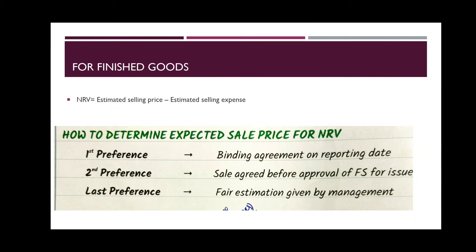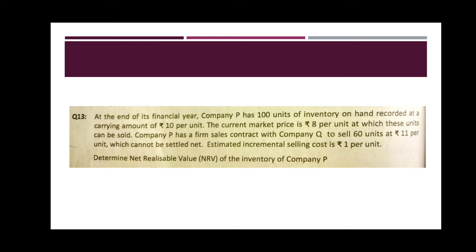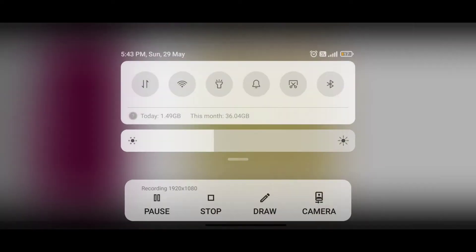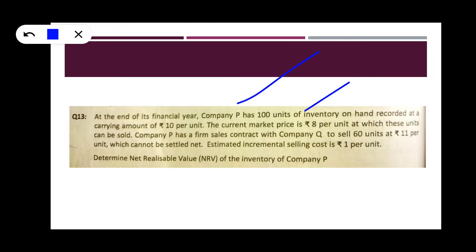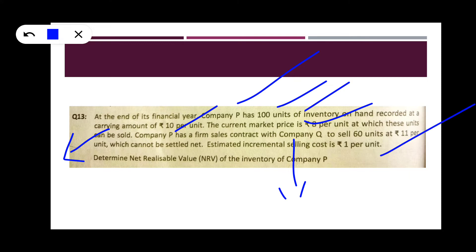Let us look at an example. At the end of the financial year, Company P has 100 units of inventory at a carrying amount of 10 rupees per unit. The current market price is 8 rupees per unit. Company P has a sales contract with Q to sell 60 units. The estimated incremental selling cost is 1 rupee per unit. How do we value this inventory?